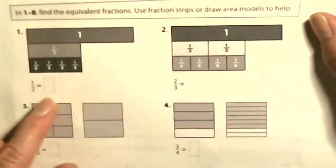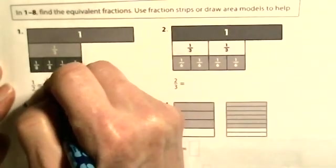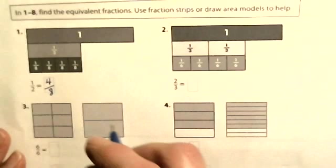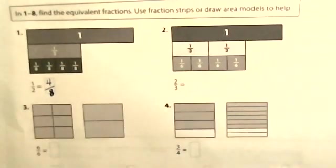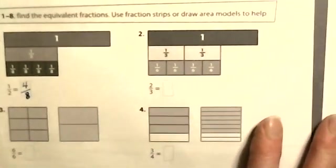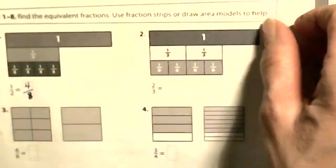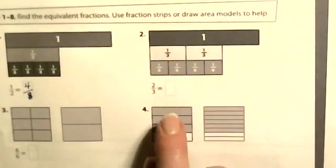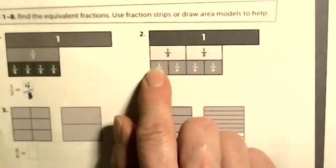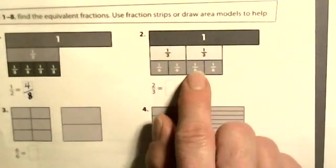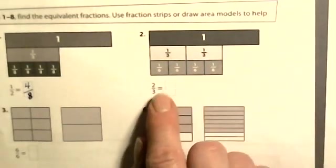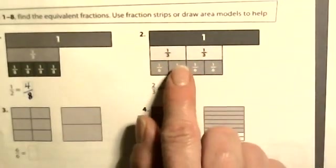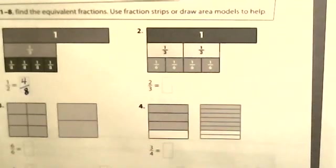So one-half equals four-eighths. Next one says one whole, and it's got one-third and another one-third — that's two-thirds. One one-sixth, two one-sixths, three one-sixths, four one-sixths. Two-thirds equals four-sixths.